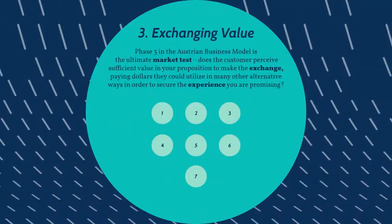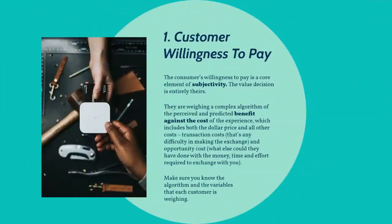Phase three in the Austrian business model is the ultimate market test. Does the customer perceive sufficient value in your proposition to make the exchange — paying dollars that they could utilize in many alternative ways — in order to secure the experience you're promising? One: the customer's willingness to pay is a core element of subjectivity. They're weighing a complex algorithm of perceived and predicted benefit against the cost of the experience, which includes both the dollar price and all other costs — transaction costs, that's any difficulty in making the exchange, and opportunity cost. What else could they have done with the money, time, and effort required to exchange with you? Make sure you know the algorithm and the variables that each customer is weighing.